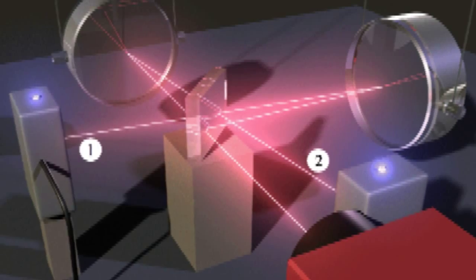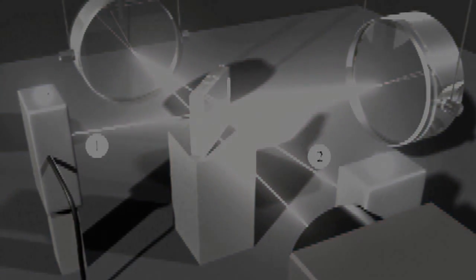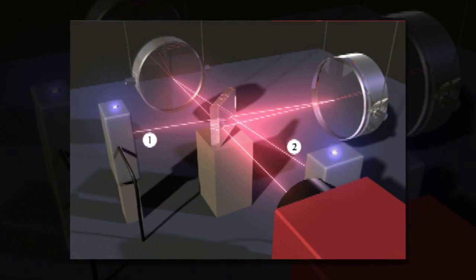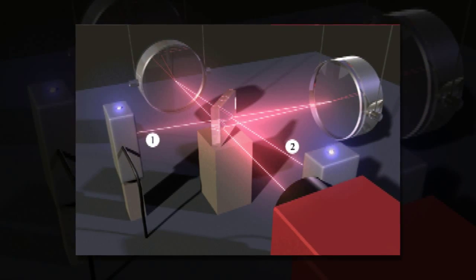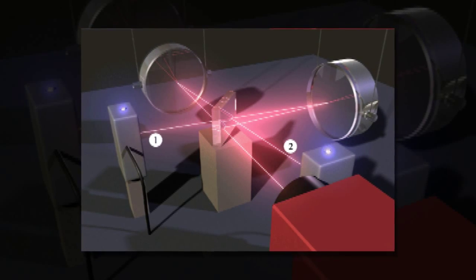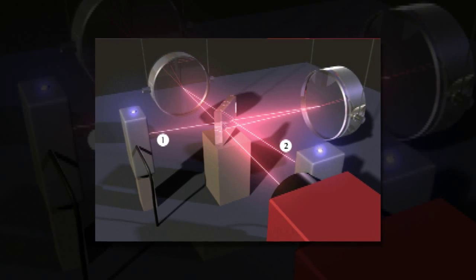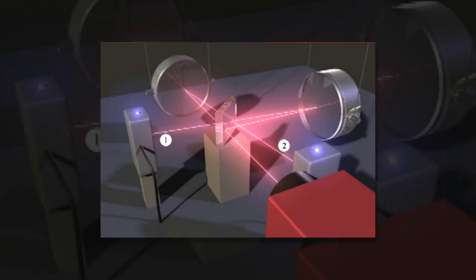This would allow for momentum to be transferred between the mirrors and the light. The mirror oscillations would then have an impact on the phase of the reflected light, causing the momentum and the light to become entangled. At that point, the entanglement could be swapped to the mirrors, causing them to be entangled by measuring the light beams as they exit.